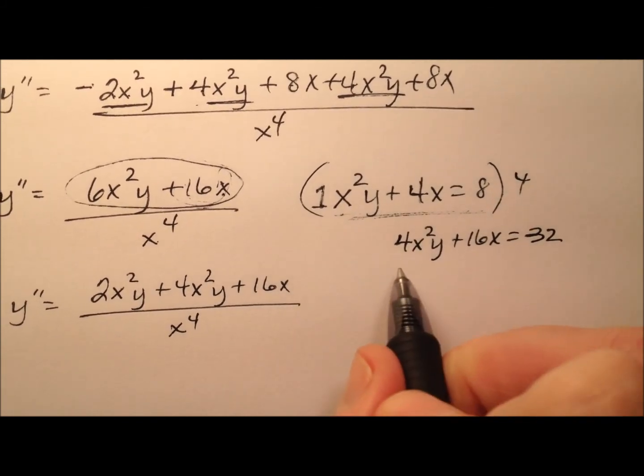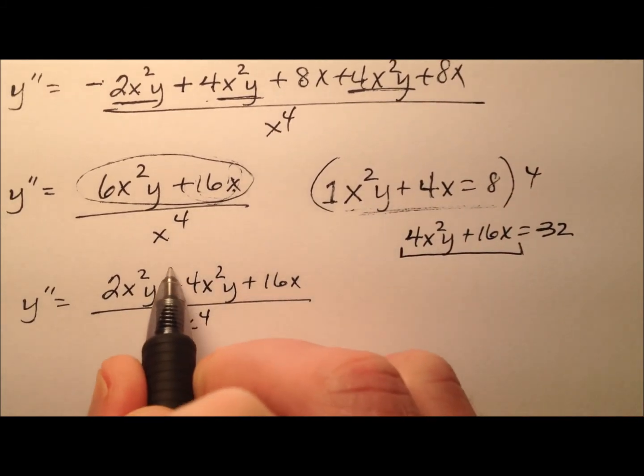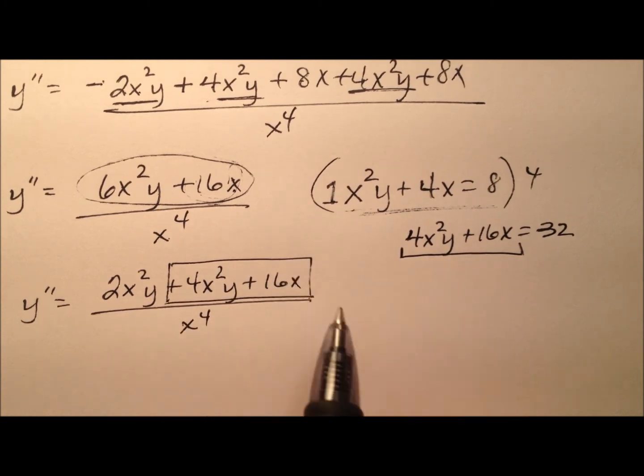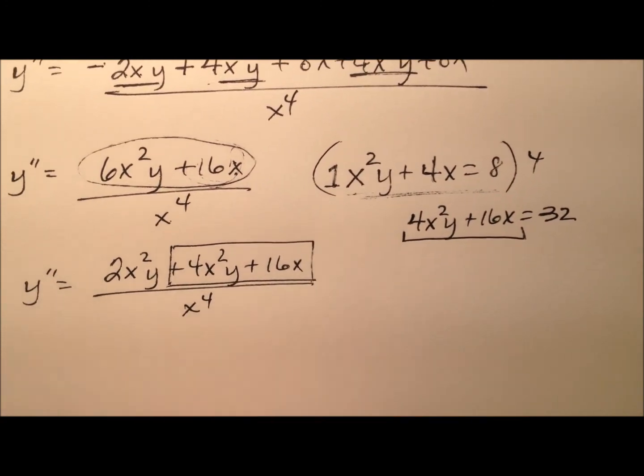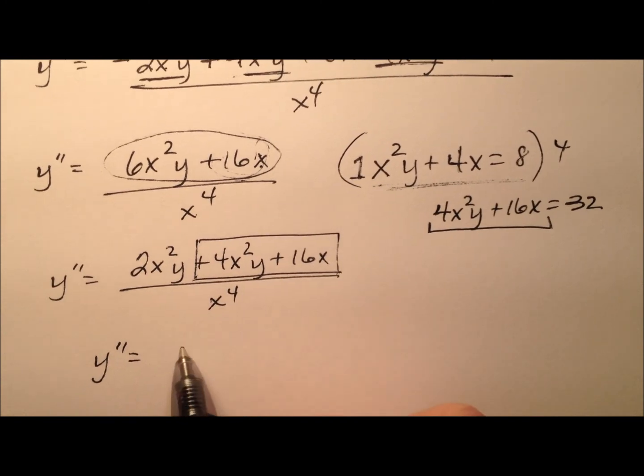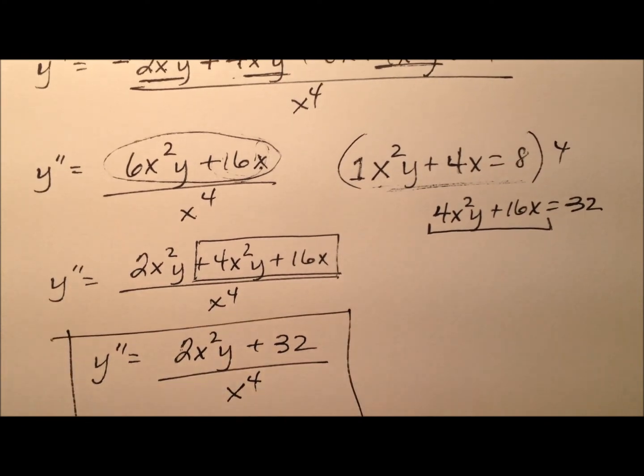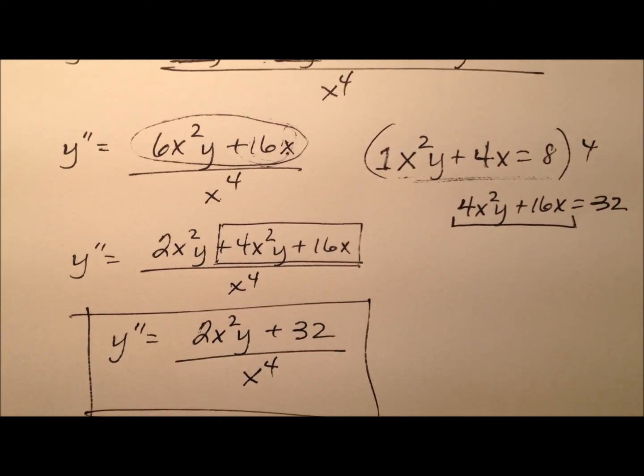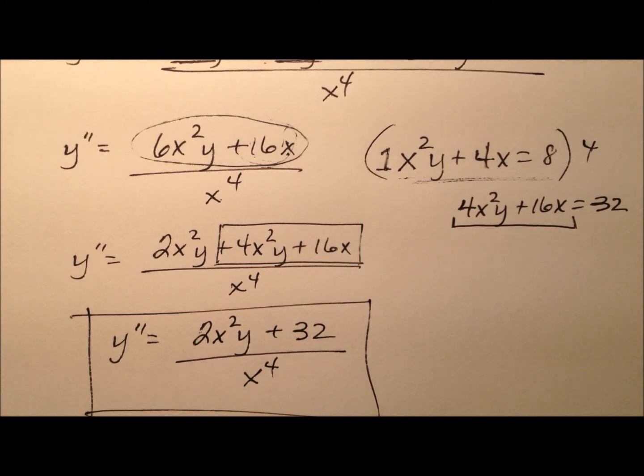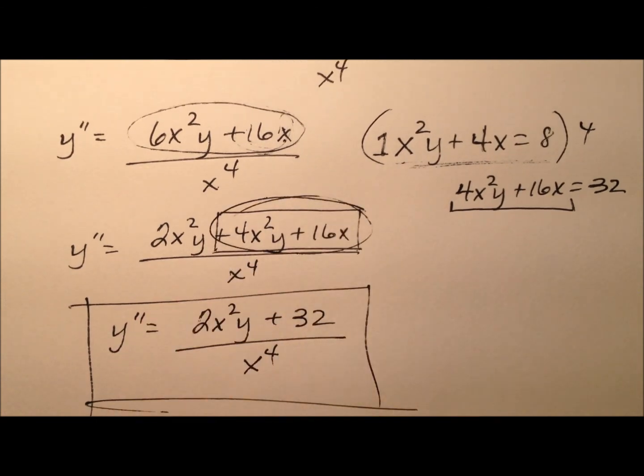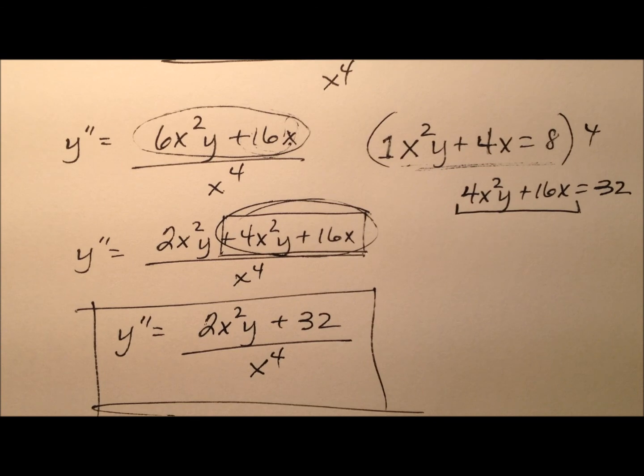You'll see some similarities here: 4x squared y plus 16x, and 4x squared y plus 16x. So I can say y double prime is 2x squared y plus 32 all over x to the fourth. That'll be a better second derivative. We've cleaned that up a bit. The powers aren't so many, not so many terms with variables. We substituted a big chunk of this for just a number 32. So there's the second derivative, and we found that by using implicit differentiation.